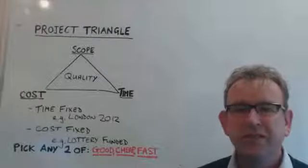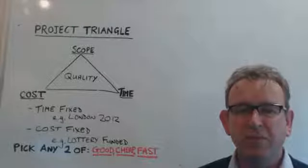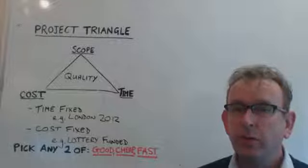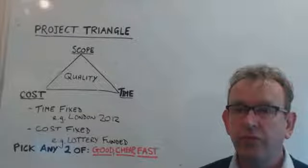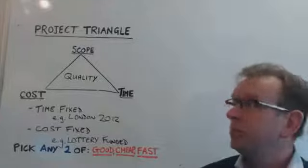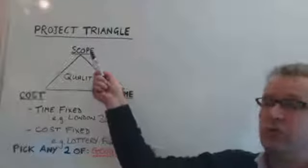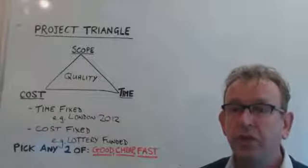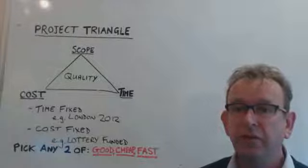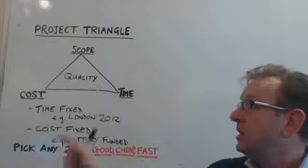Hello and welcome to this project management whiteboard. Today we're going to talk about the project triangle. You can see behind me a triangle with three corners. We have scope, which refers to all the deliverables and the products which we're going to deliver from our project.